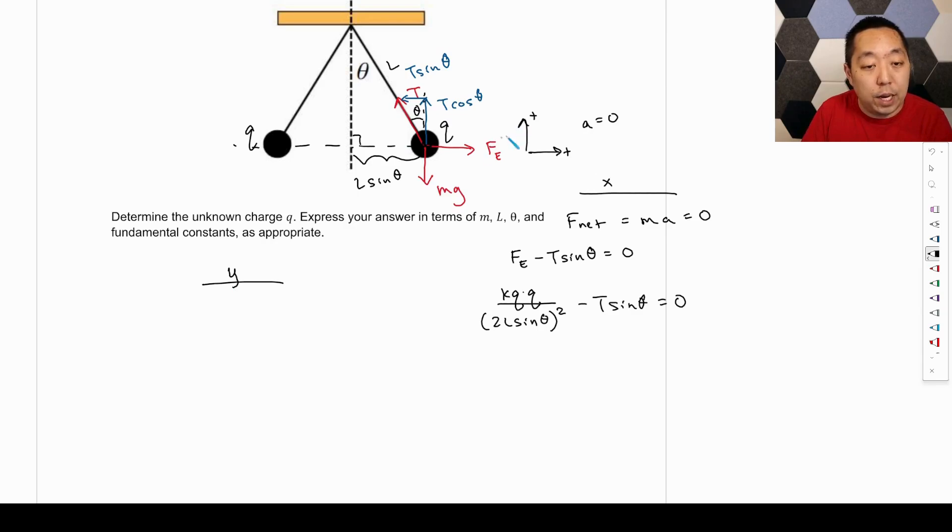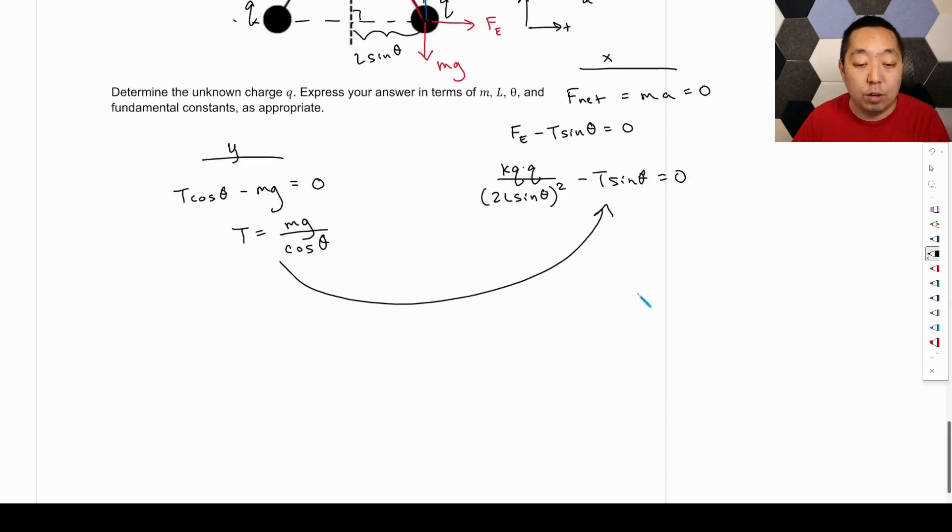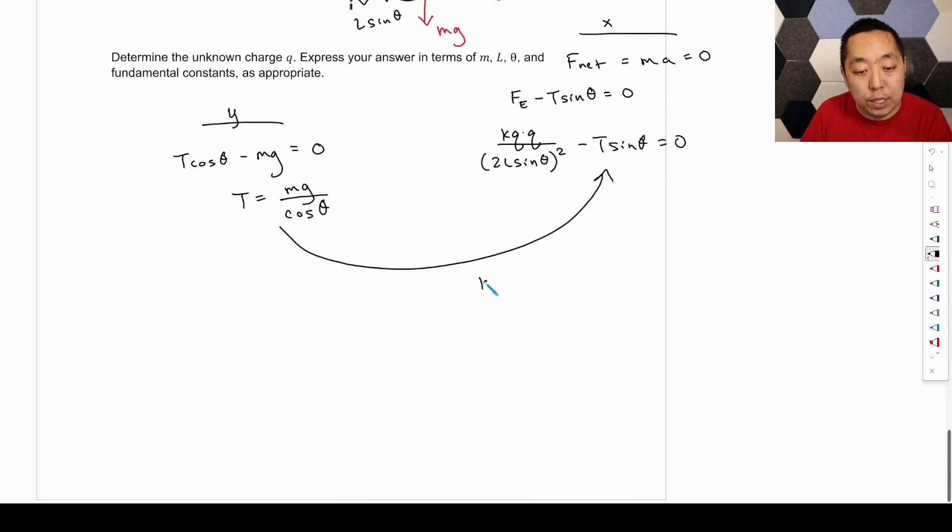The upward force, if we make up positive, we have T cosine theta pointing up. We have Mg pointing down. And that's the net force. And that equals zero. So we know the T is equal to Mg over cosine theta, which we can then plug into here to then get rid of the tension. And we can then solve for Q in terms of other variables. So this is going to be KQ squared, Q times Q. Go ahead and square all of this. This is going to be 4L squared sine squared theta minus Mg over cosine theta times sine theta equals zero.